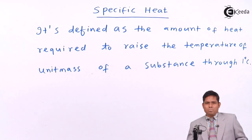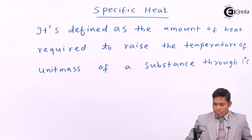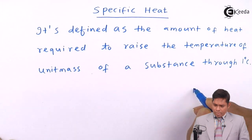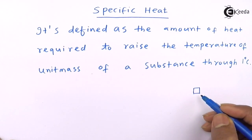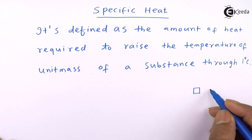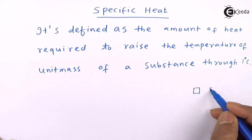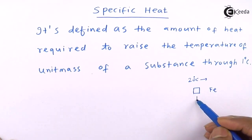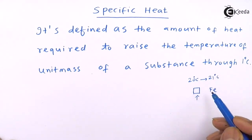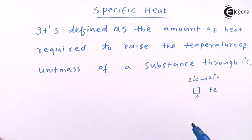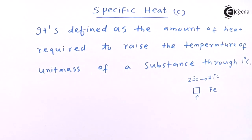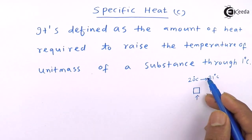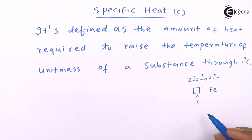Unit mass — it might be gram, it might be kilogram, but unit value. For example, if I take a piece of iron whose temperature is now 20 degrees centigrade and I supply heat so the temperature rises to 21 degrees centigrade, whatever amount of heat I have applied is known as the specific heat. The symbol we use is C.